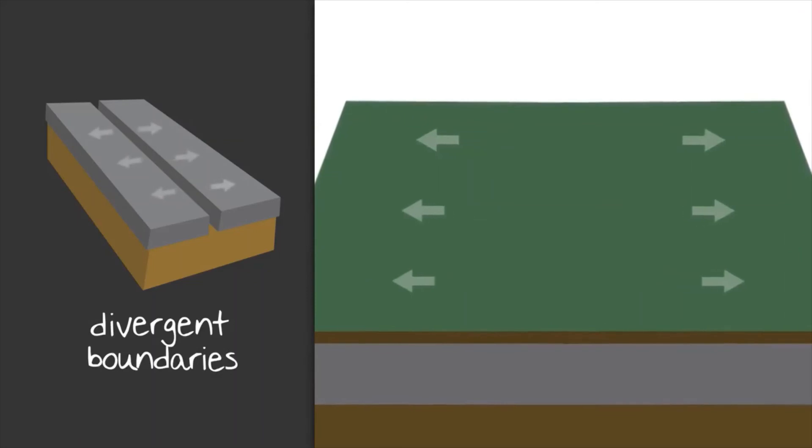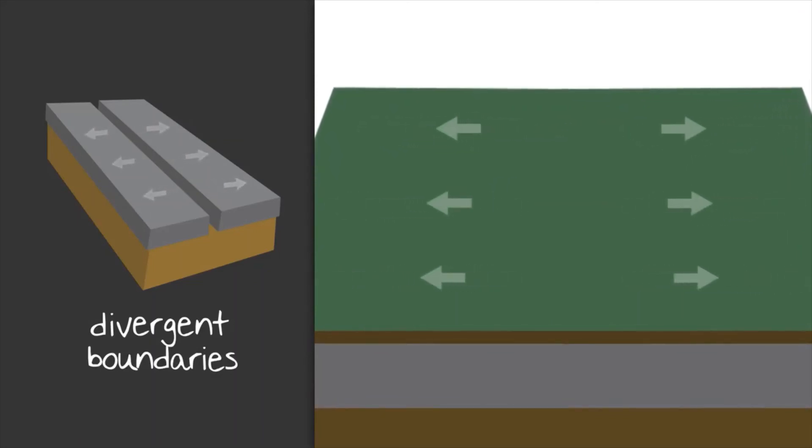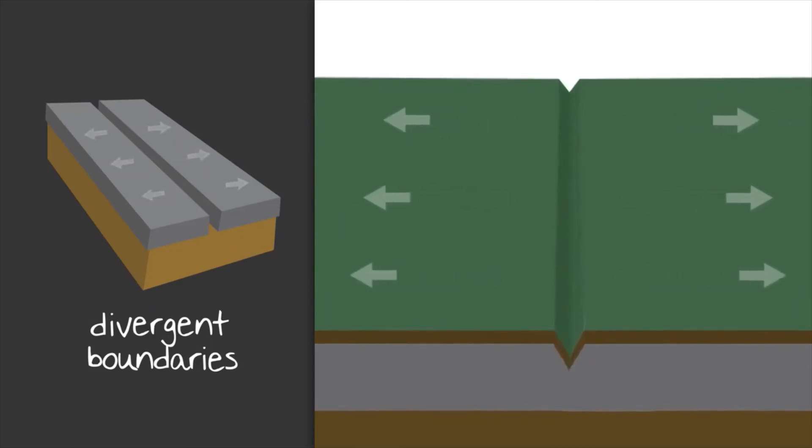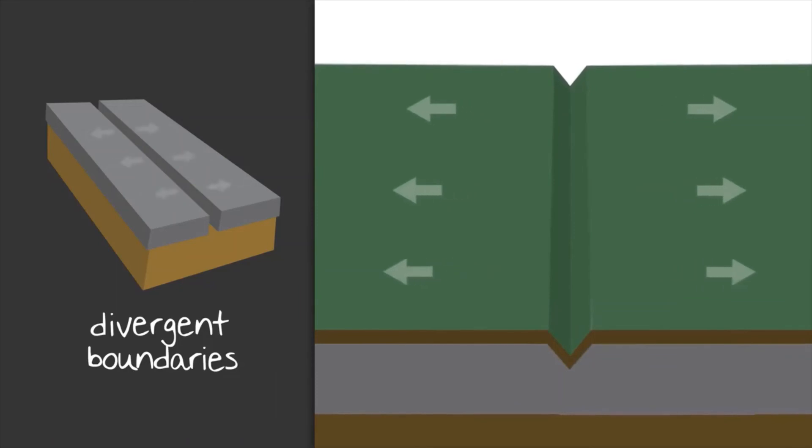Like we mentioned before, divergent boundaries occur when plates are moving away from one another. Either the space between the two plates widens and becomes a large crack or rift, such as the East African Great Rift Valley that runs from Lebanon to Mozambique,